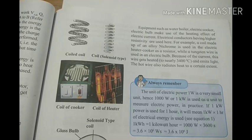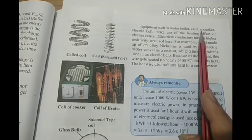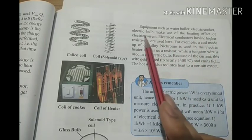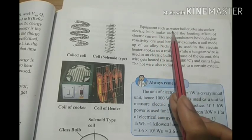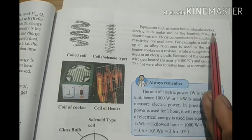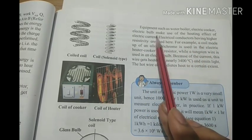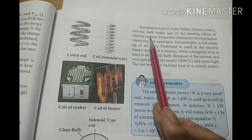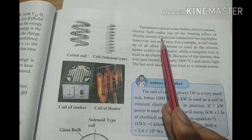Ab iske examples dekhte hain. Equipment such as water boiler, electric cooker, electric bulb make use of the heating effect of electric current. Aapne dekha hoga ki yeh saare equipment mein heat produced hoti hai, kyunki inme current pass hota hai aur woh current ko resistor se pass hokar jaana hota hai, toh wahan pe heat produced hoti hai.